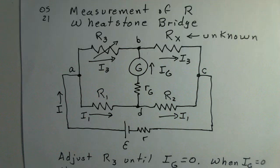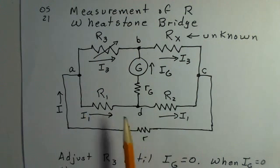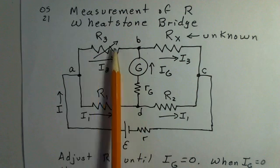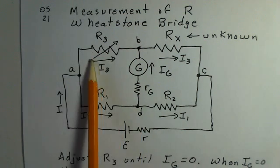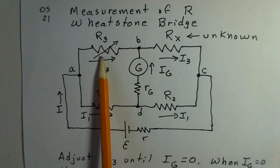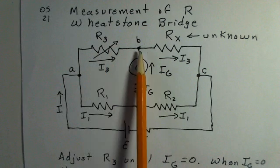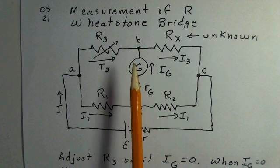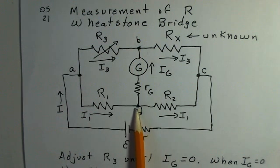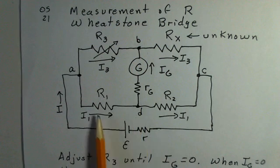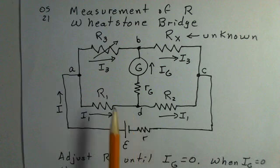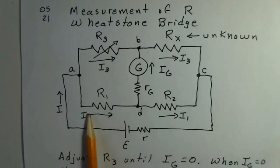The Wheatstone Bridge gives us a means for finding the value of an unknown resistance. Its principle of operation is that we adjust R3 such that the voltage drop through R3, across R3, gives us a potential at point B that's the same as the potential at point D. The voltage drop here equals the voltage drop here. I1 R1 equals I3 R3.